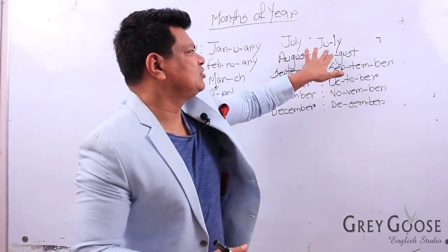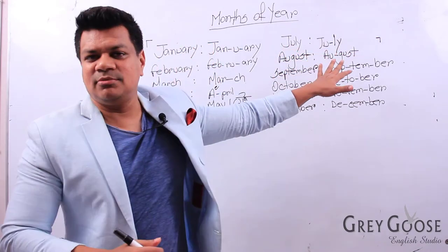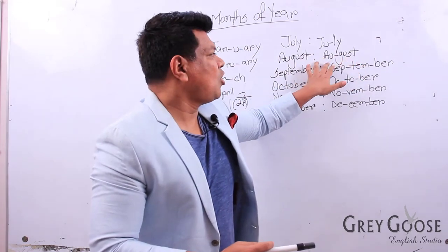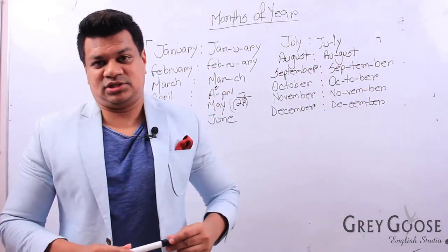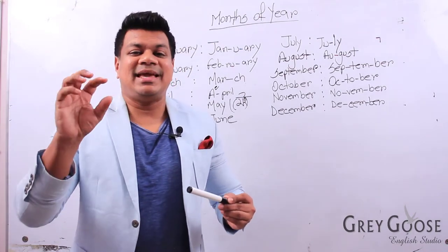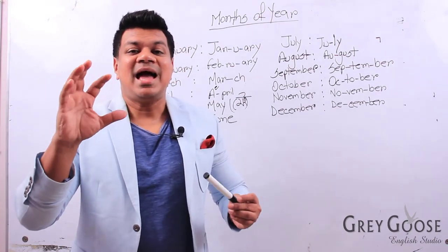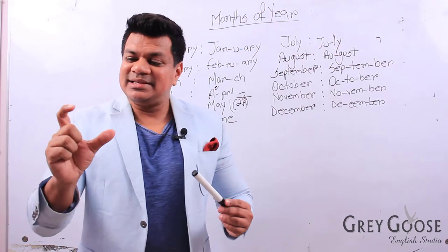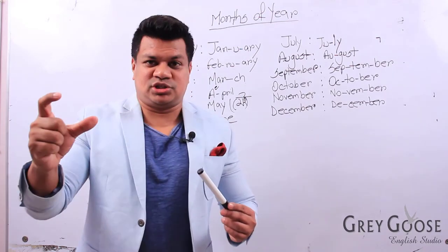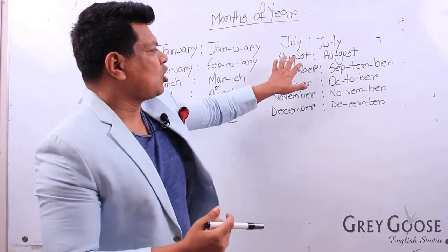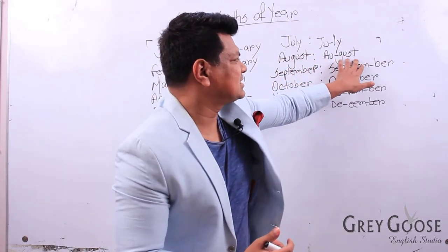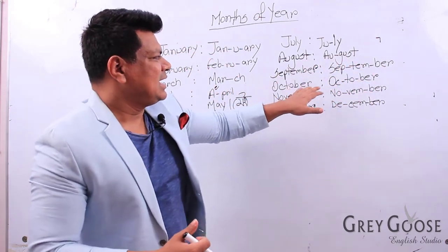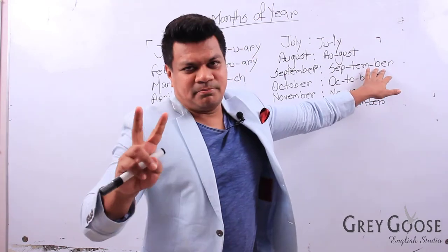Next one: July. Don't pronounce it 'July' — it should be July. I've broken that into two syllables. So it has to be July. Next: August. Make sure you pronounce it August — August, August.